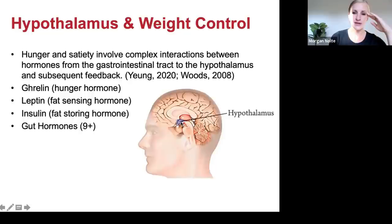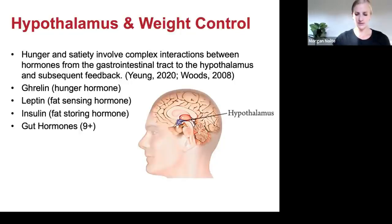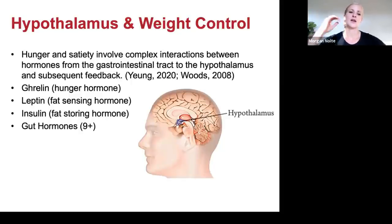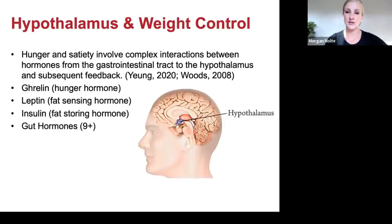Here's a picture of the hypothalamus — it's in the middle of the brain — and hunger and satiety or fullness are controlled there. It's complex — we like to think we can volitionally control how much we eat, but hunger involves complex interactions between hormones from your gut and gastrointestinal tract to the hypothalamus in the brain and feedback back and forth. If you've done restricted calorie diets, you know that hunger can be so hard to control.